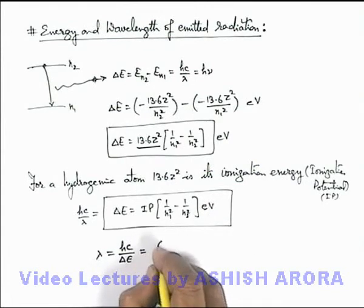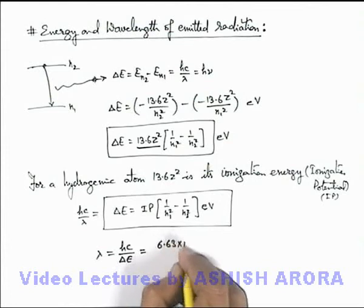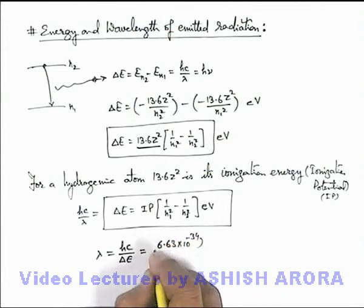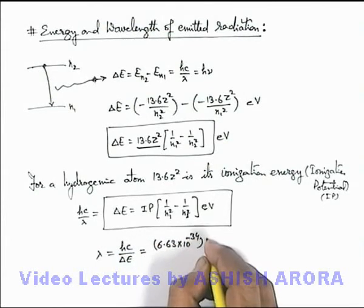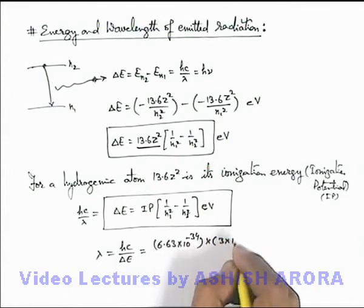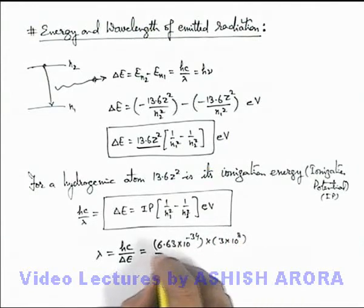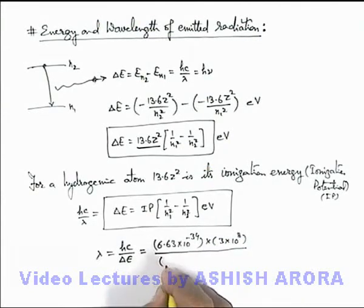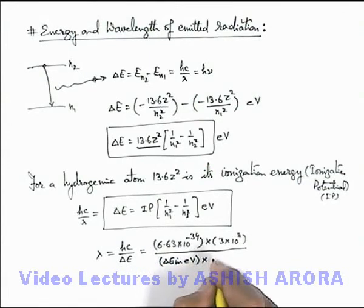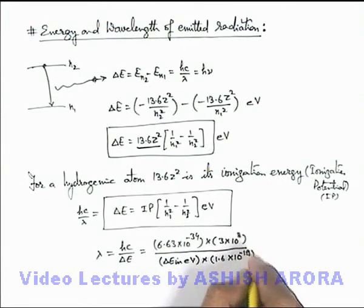So this will be 6.63 into 10 to power minus 34, the value of Planck's constant, multiplied by 3 into 10 to power 8, divided by, if we have this energy delta E in electron volt, we can multiply with the conversion factor of 1.6 into 10 to power minus 19.